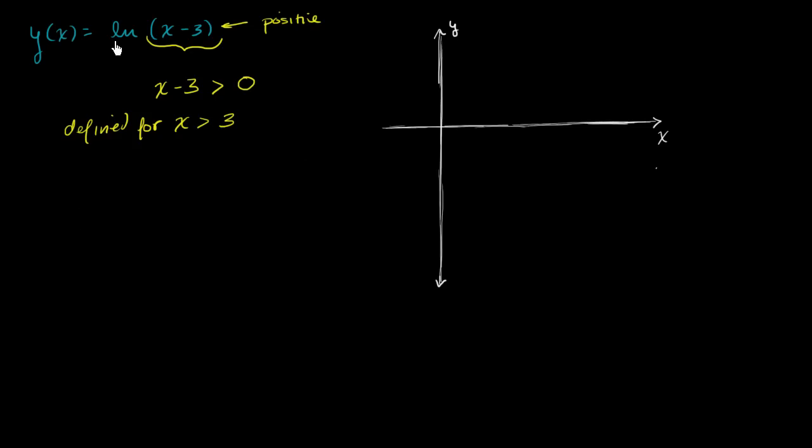And the most obvious one is, what makes this entire function equal to 0? When are we going to intersect the x-axis? So let's just think about that for a little bit. When is the natural log of x minus 3 going to be equal to 0?